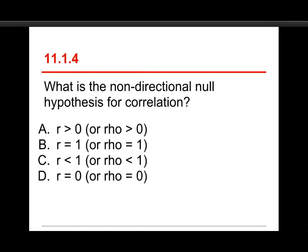Number four. What is the non-directional null hypothesis for correlation? And your choices are r is greater than zero or rho, r is equal to one, same thing with rho, r is less than one, or r is equal to zero. You've got four different choices here. The correct choice in this case is D. That R, which is the correlation coefficient, is equal to zero. Now, let me just mention really fast. I talked about this before.